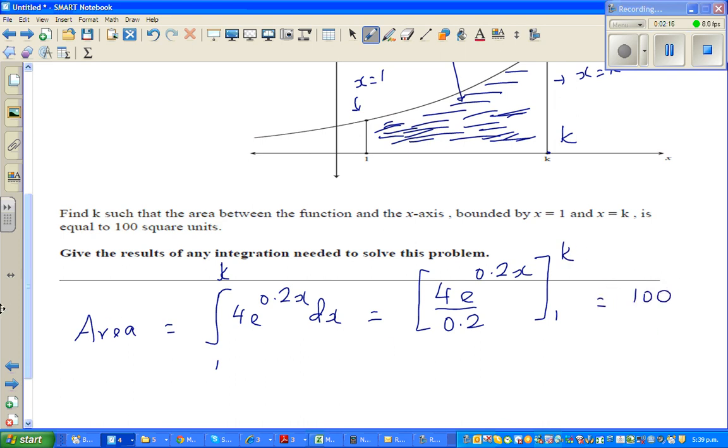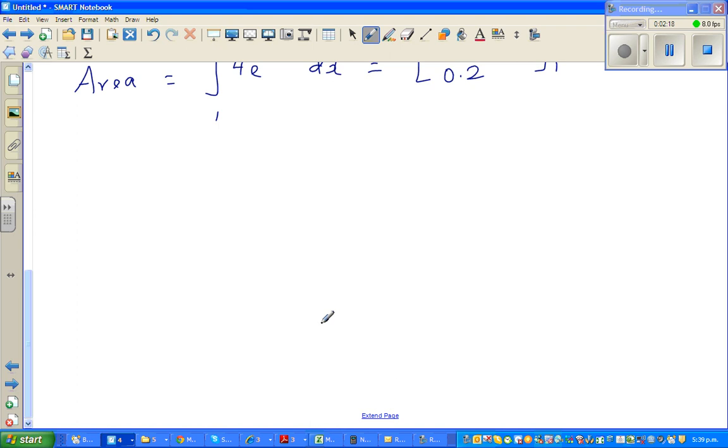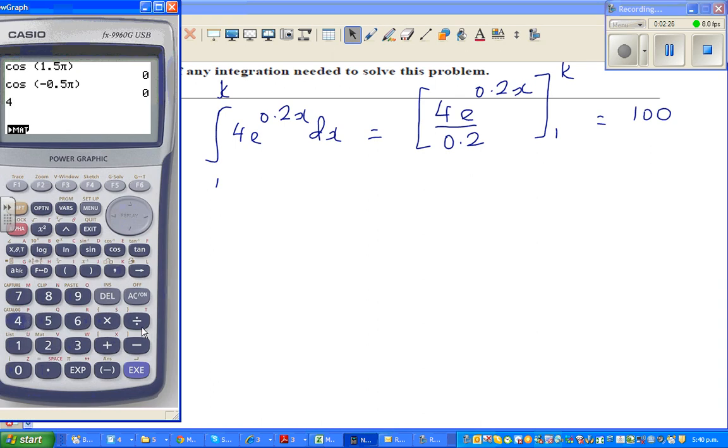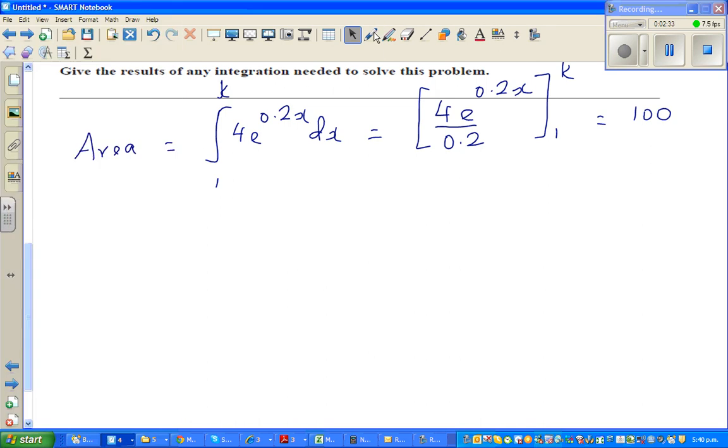So moving further, 4 divided by 0.2, you can use a calculator, 4 divided by 0.2 is 20, because it's 4 divided by 1 fifth, that is same as multiplying by 5. So this is nothing but 20e to the power 0.2x, from 1 to k equals 100.